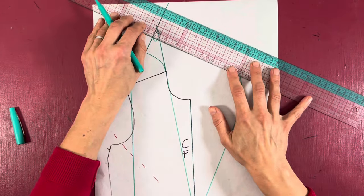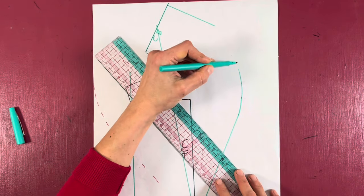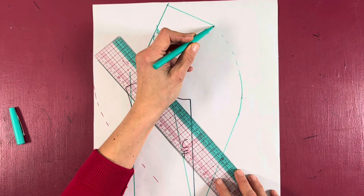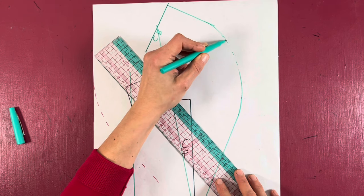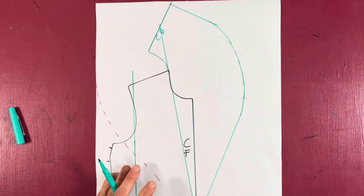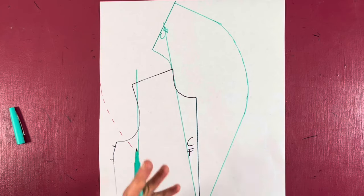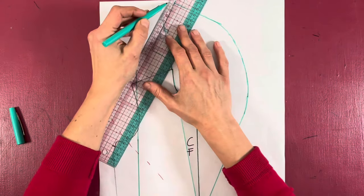a right angle for my center back, and then I can connect my two lines with a nice smooth curve. Again, I will smooth it out with my pattern master.